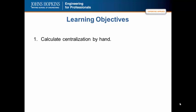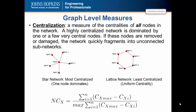Notice that these sound very similar to degree centrality, betweenness centrality, and closeness centrality. However, centrality and centralization are slightly different. Centrality is about the central importance of a given node. Centralization describes the extent to which one or a few nodes dominate the network. Centralization is a measure of the centralities of all nodes in the network.